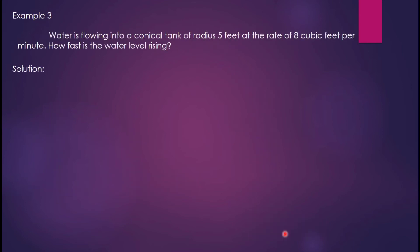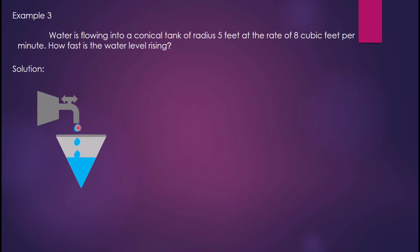Example three: water is flowing into a conical tank of radius 5 feet at the rate of 15 cubic feet per minute. How fast is the water level rising? To illustrate, we have a faucet filling a conical tank. The radius is 5 feet and the rate of volume change dV over dt equals 15 cubic feet per minute.